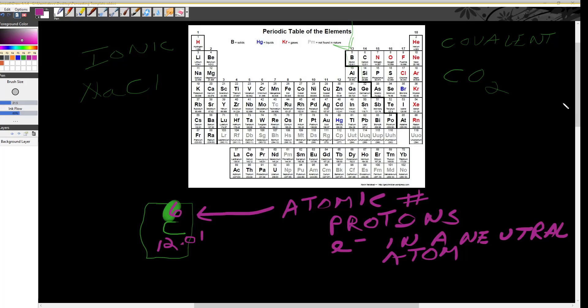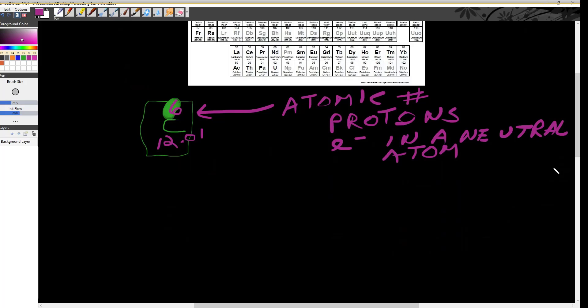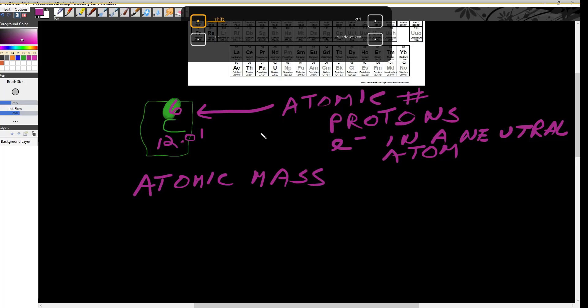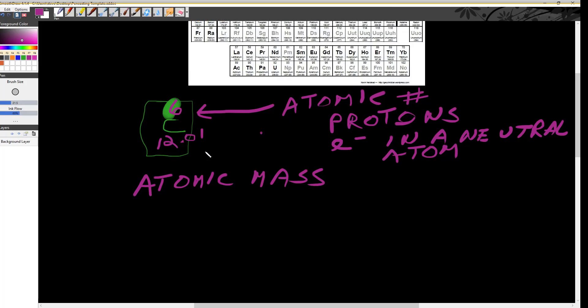All right, the next thing we're going to look at is the bottom number, which is the atomic mass. The atomic mass is the number of protons plus the number of neutrons.